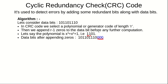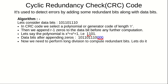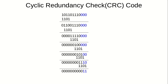Since the length of the generating code is four, we have appended three zeros to the data. Now we need to perform long division to generate the redundant code — but instead of actual division, we are going to perform bitwise XOR.